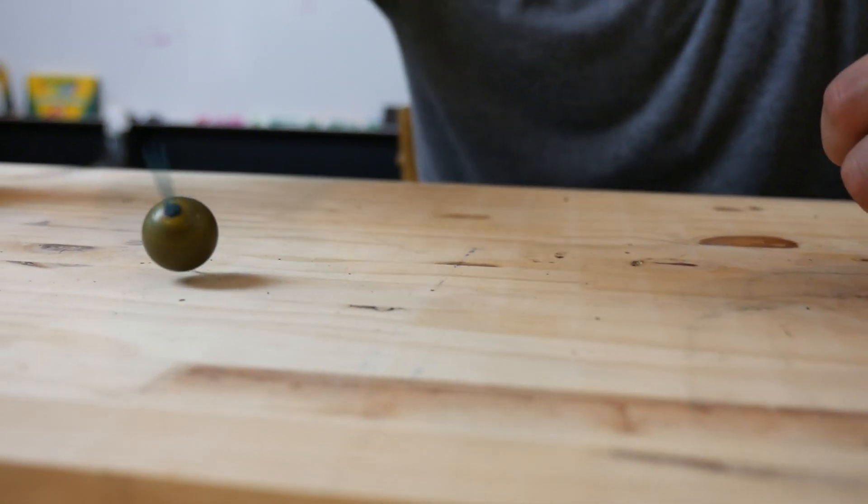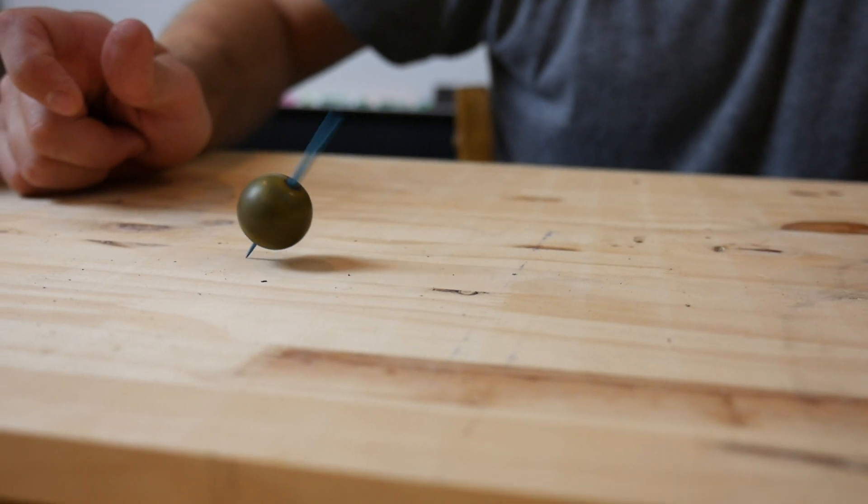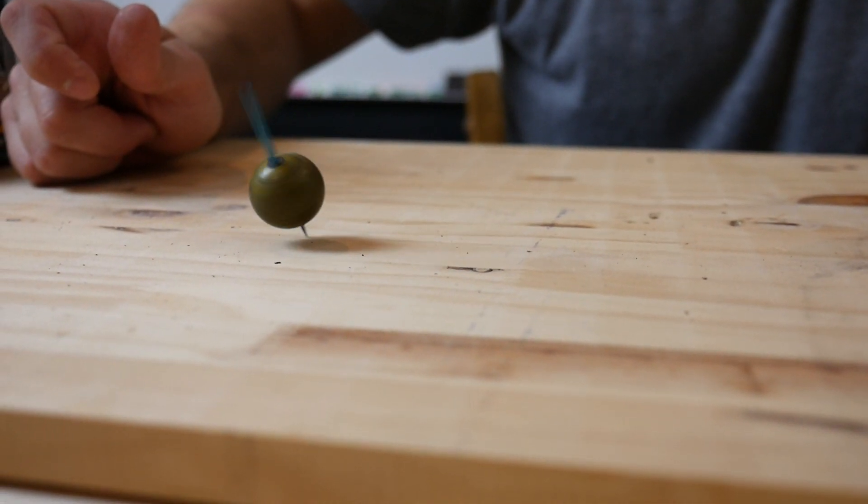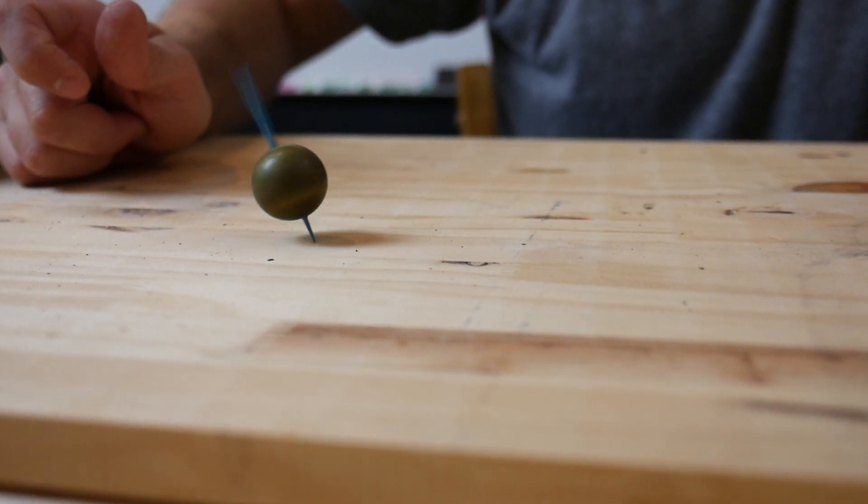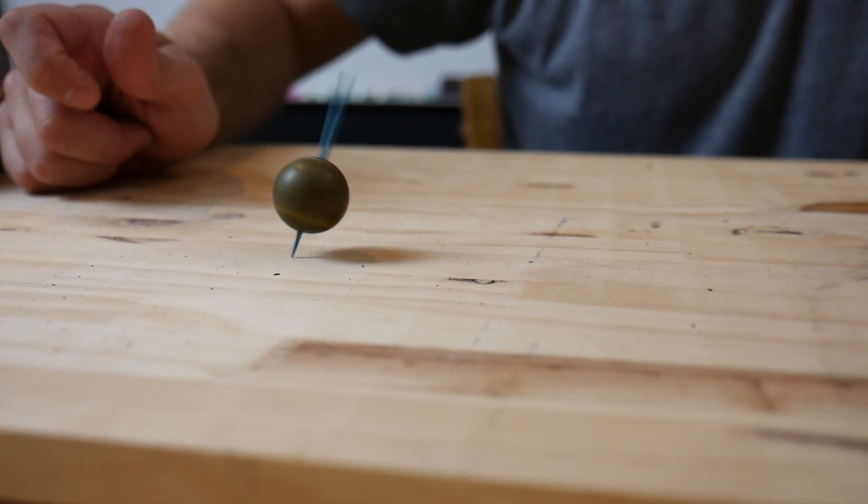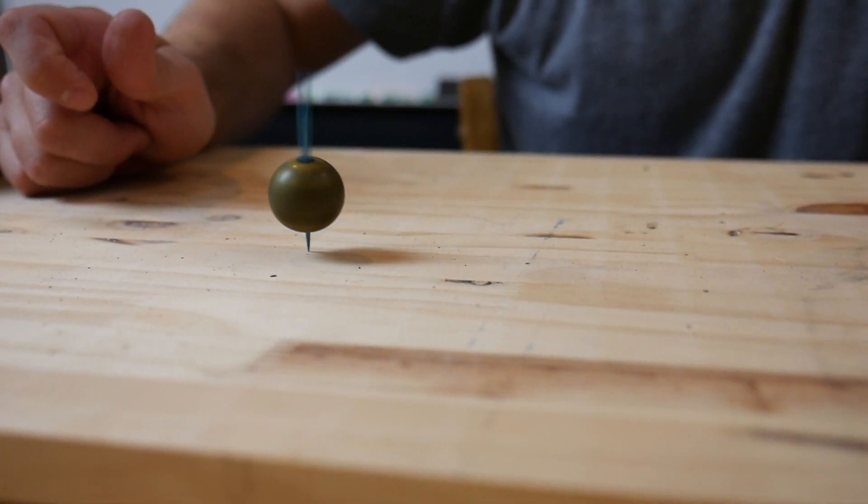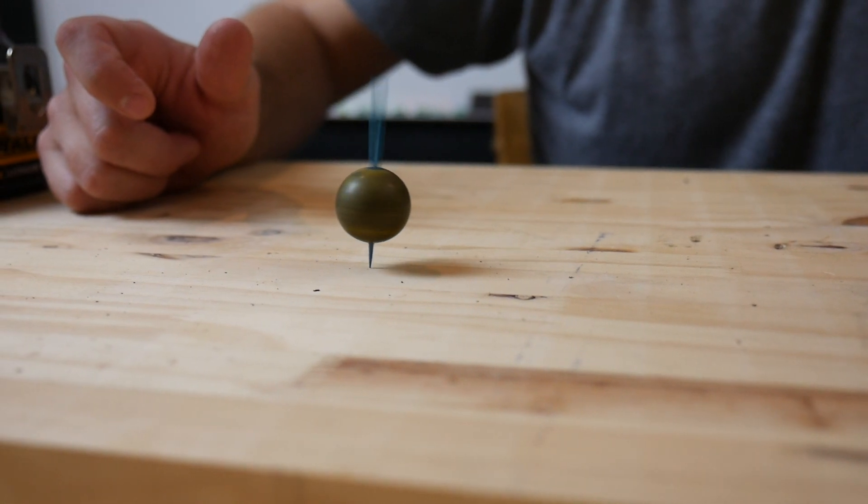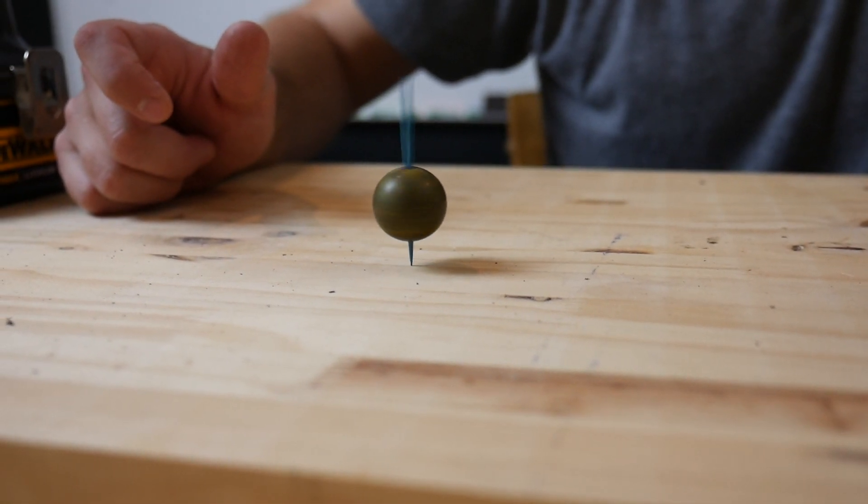This thing spins forever. It's so crazy to me that instead of wanting to fall over when it's off at an angle like this, it wants to stand up. This has to do with this term called gyroscopic procession, and it's the same reason why the wheel actually wants to stand up whenever we spin it.